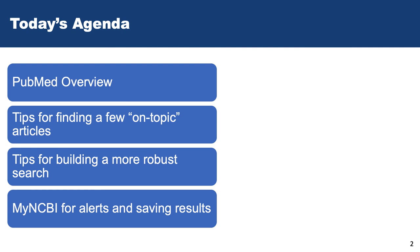We're going to talk today a little bit about PubMed. I'll give you a quick overview and talk about some tips for finding on-topic articles. I'll show you two strategies for searching: the first one is what we call a quick and dirty search, so there are some things you can do if you just need a handful of articles.